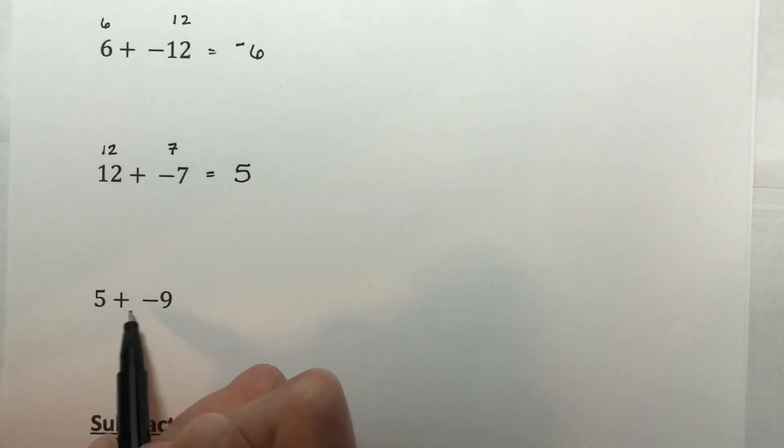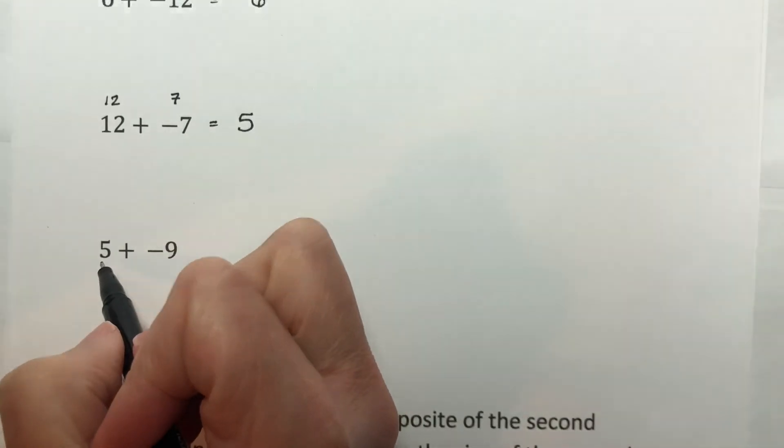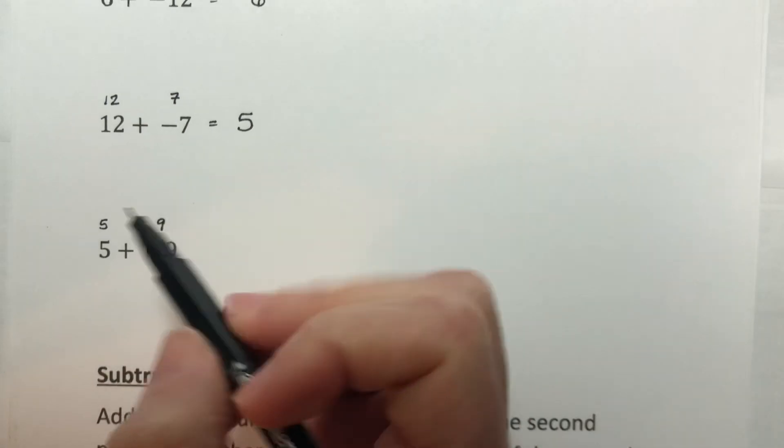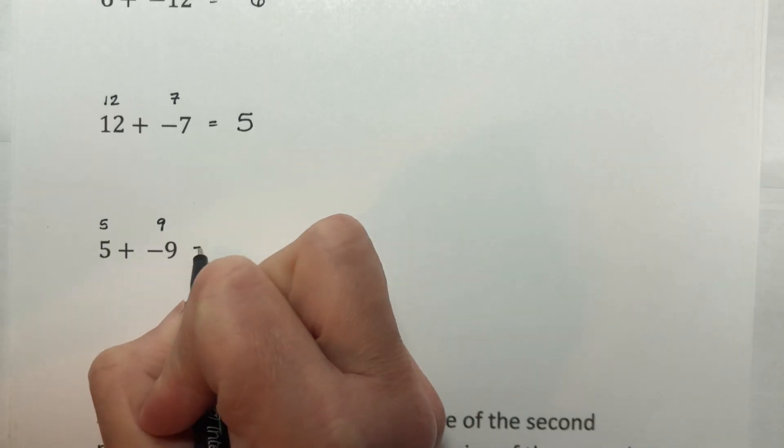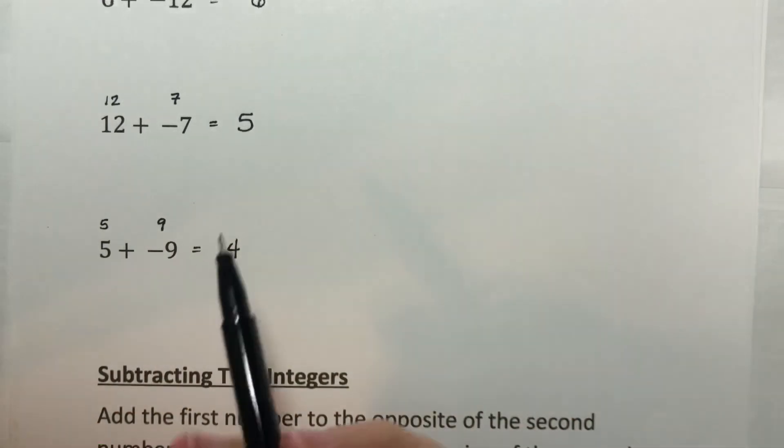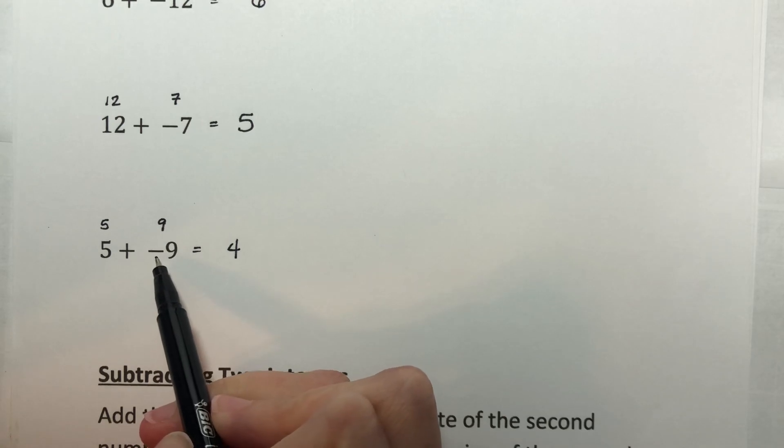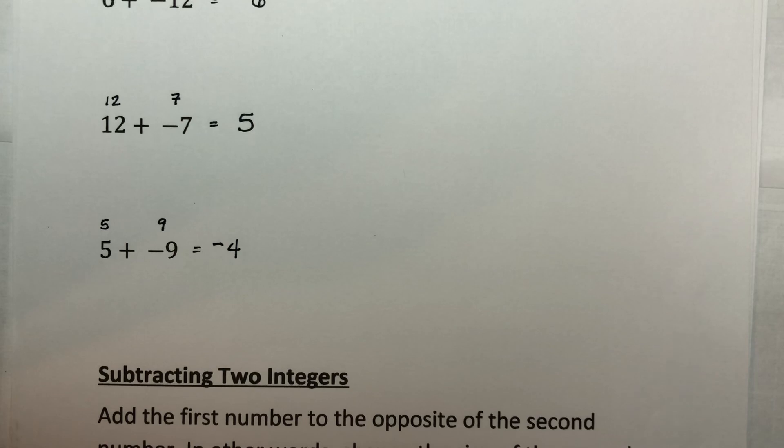Five plus negative nine. The absolute value of five is five. The absolute value of negative nine is nine. Subtract the smaller from the larger, nine minus five is four. The larger absolute value was nine. Its original sign was a negative. So my answer is negative. And we will go on to subtracting integers in the next part.